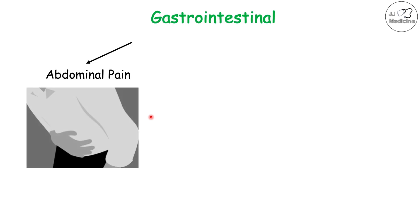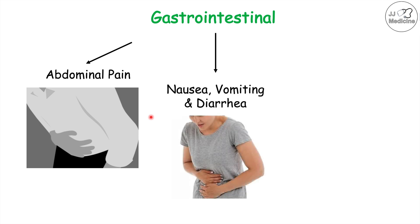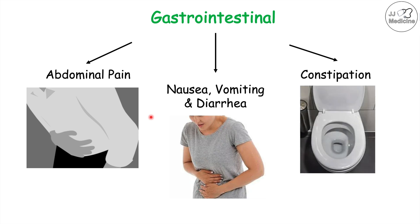There are gastrointestinal effects that can occur from lead poisoning as well. These include abdominal pain, nausea, vomiting, and diarrhea, and in some cases constipation — the constipation being something found more in children. Abdominal pain, nausea, vomiting, and diarrhea are more commonly found in lead poisoning overall.